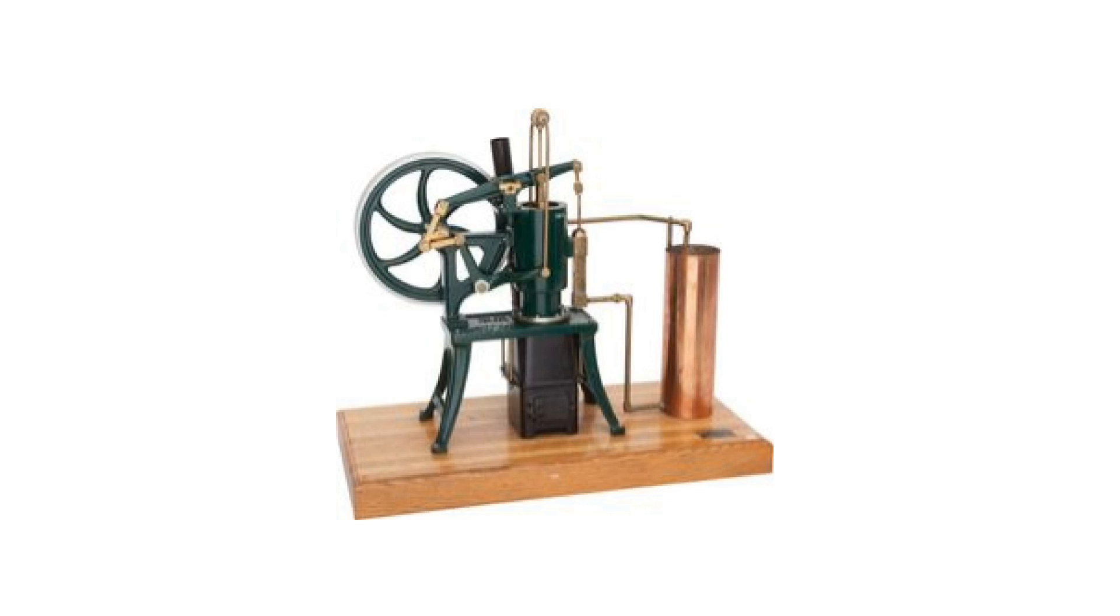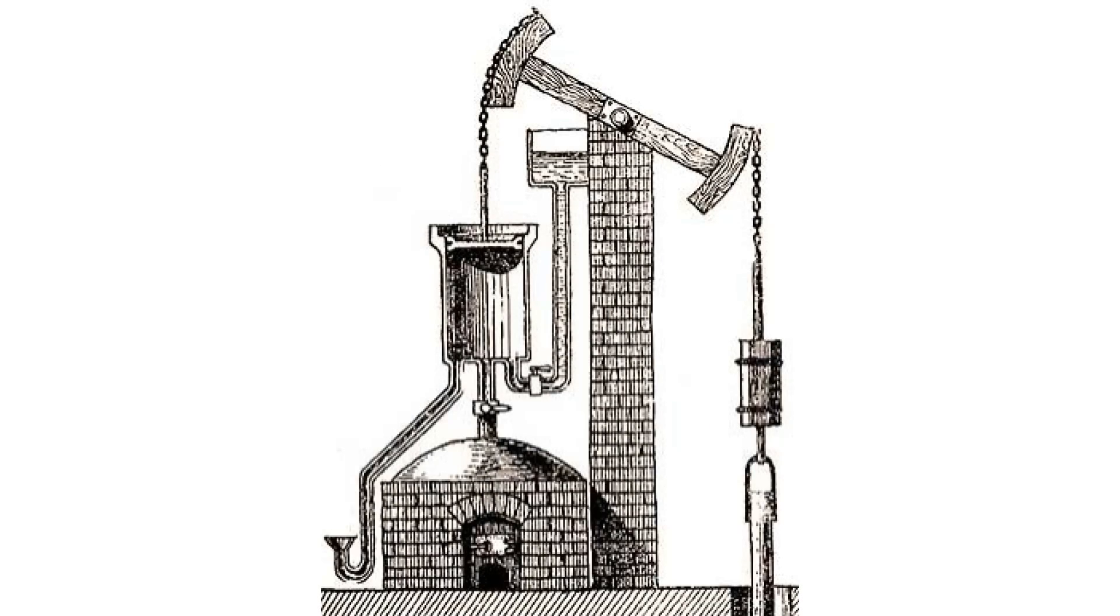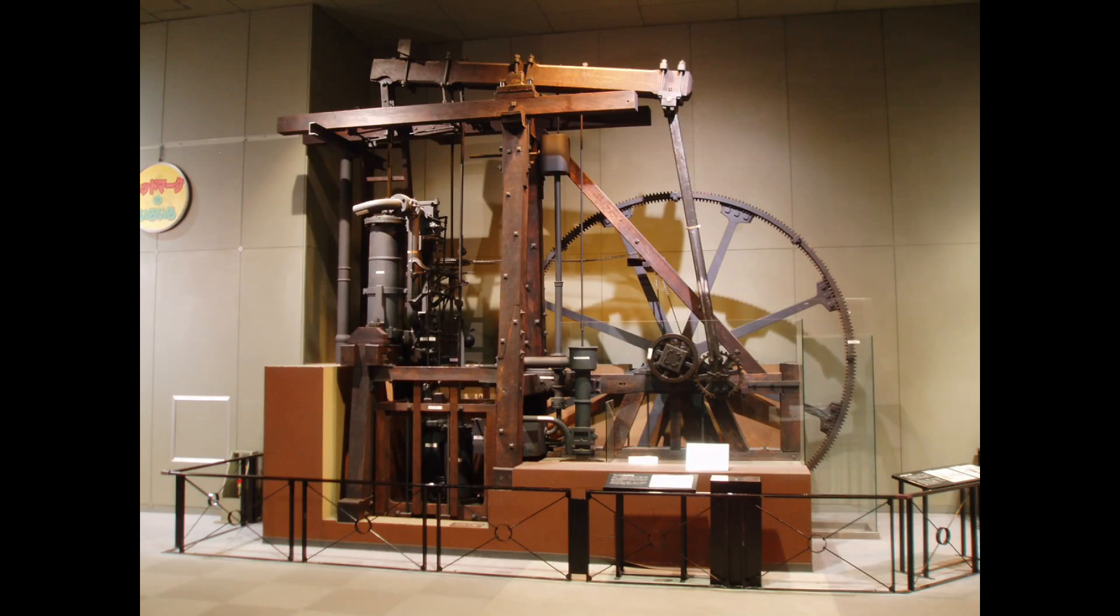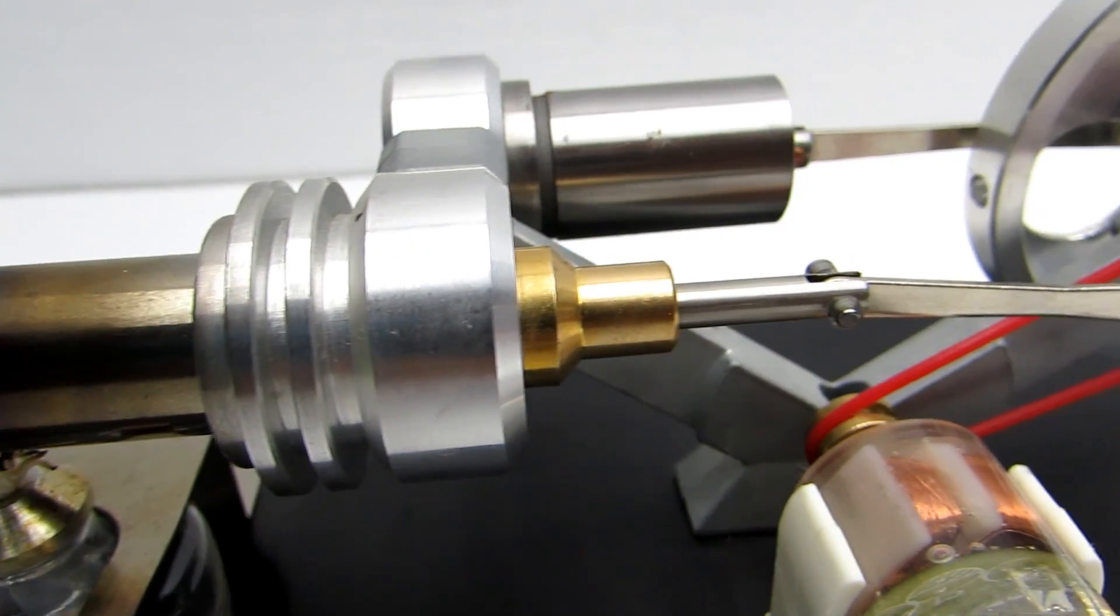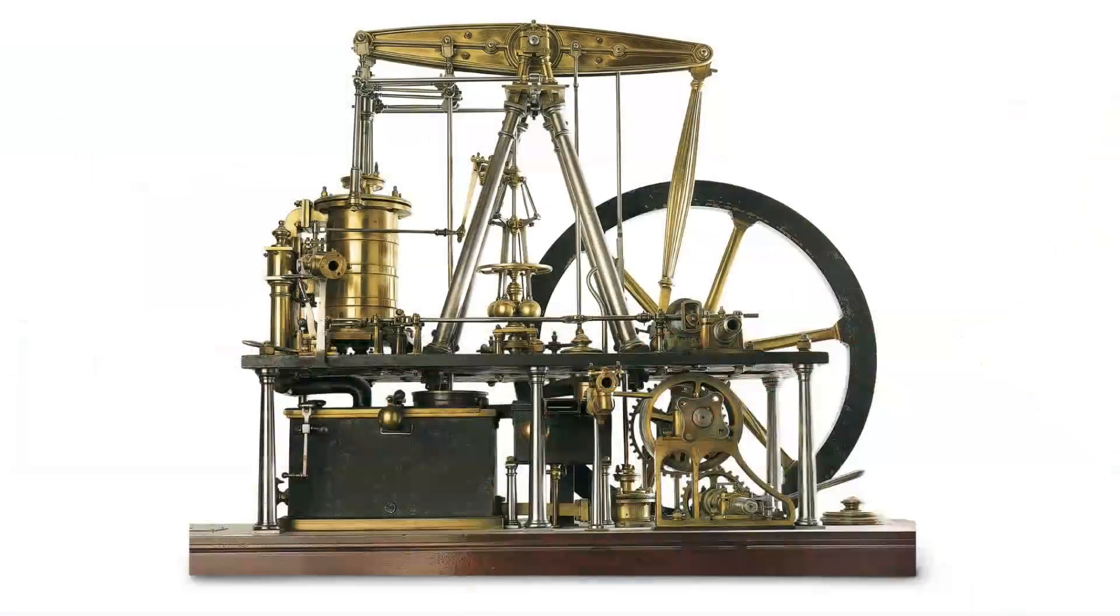The first Stirling engines, like steam machines, have been designed for pumping water from mines, used as conventional pumps. Stirling engine efficiency reached 18%, against 10% for steam engines.